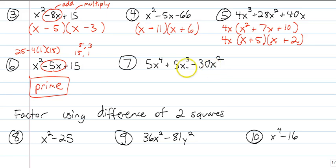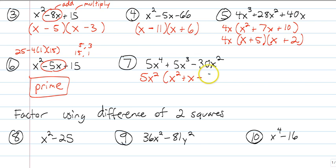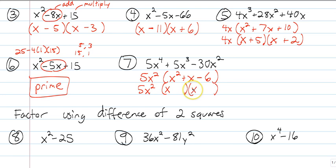And finally, number 7 — we need to take out a GCF again. We can take a 5 and an x squared out of everything. So I'm left with x squared, plus x, and minus 6. Now we need to reverse FOIL that. Two numbers that multiply to negative 6 that add to positive 1 — it's probably going to be 3 and 2. We need one of them negative to get negative 6, and since we need positive 1, the 3 needs to be positive and the 2 needs to be negative. So that is GCF and then reverse FOIL.